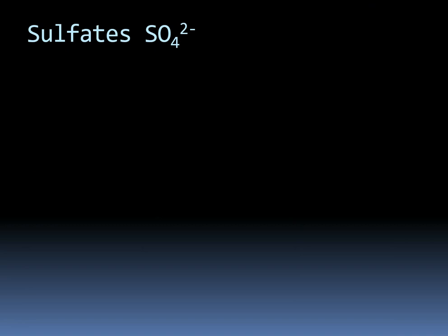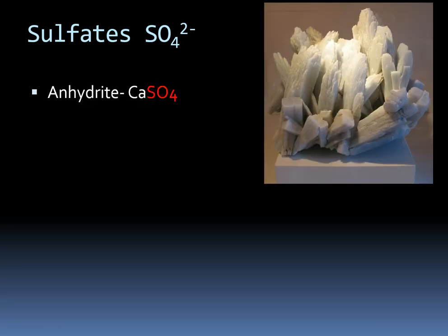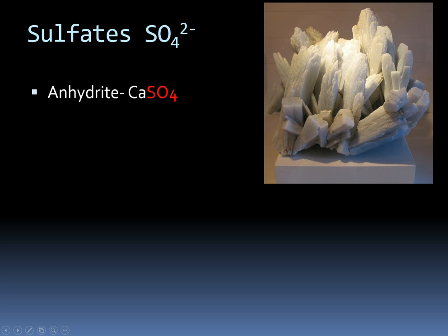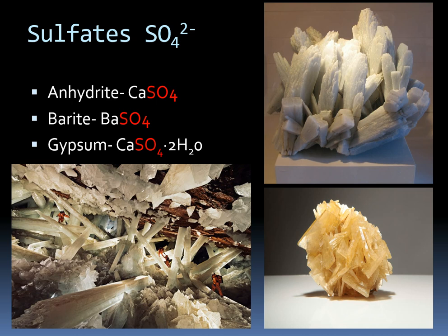Sulfates are closely related to sulfides because they both have sulfur, but in this case the sulfur is bonded to four oxygens — that's the big difference. Common sulfates include anhydrite, which is a calcium sulfate with nice white crystals. We have barite, a barium sulfate — barium is a really heavy element, so barite has a high specific gravity and feels heavy, making it easy to recognize. And gypsum is a calcium sulfate just like anhydrite, but it has water in its structure, which is actually why the other is called anhydrite — because it lacks the water.